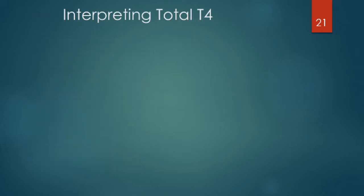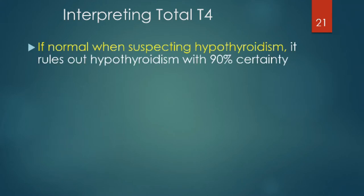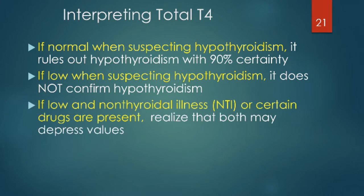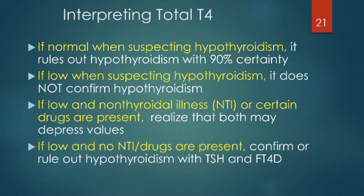To summarize interpreting total T4: if it's normal when you suspect hypothyroidism, it generally rules out hypothyroidism with about 90% certainty. If it's low and you suspect hypothyroidism, it does not confirm hypothyroidism. If it's low and you know there's non-thyroidal illness or other drugs present, both may depress the values, so use additional tests. If total T4 is low and there's no reason to believe non-thyroidal illness or drugs are present, confirm or rule out hypothyroidism using additional tests — TSH and free T4.